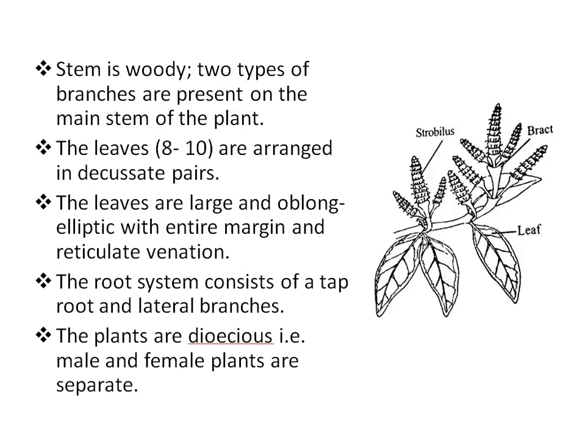The root system of Gnetum consists of a tap root and lateral branches, and it resembles that of dicot plants. The plants are dioecious, that is male and female plants are separate. The reproductive organs are called strobili and they are produced at the tip of the dwarf branches.